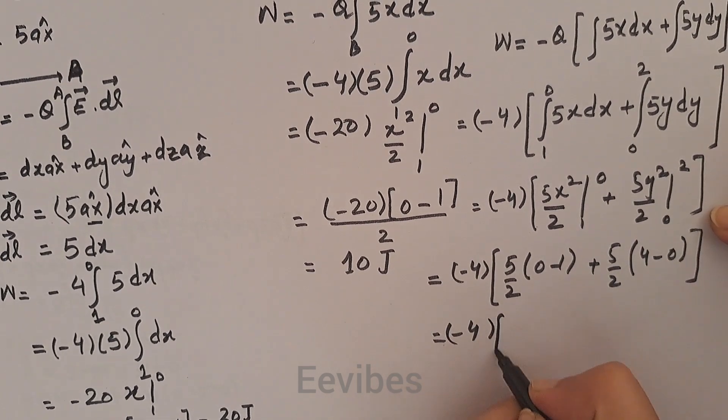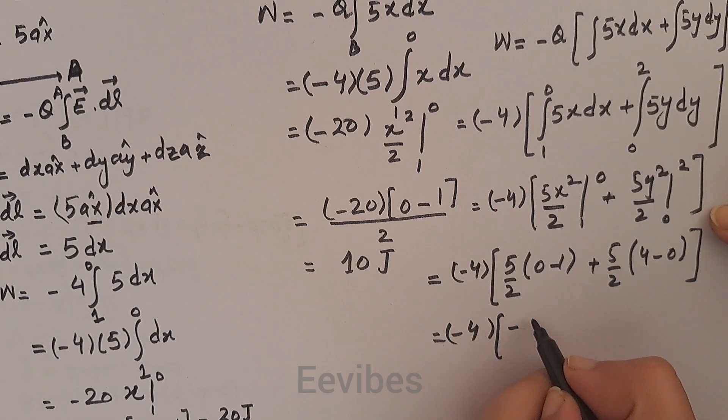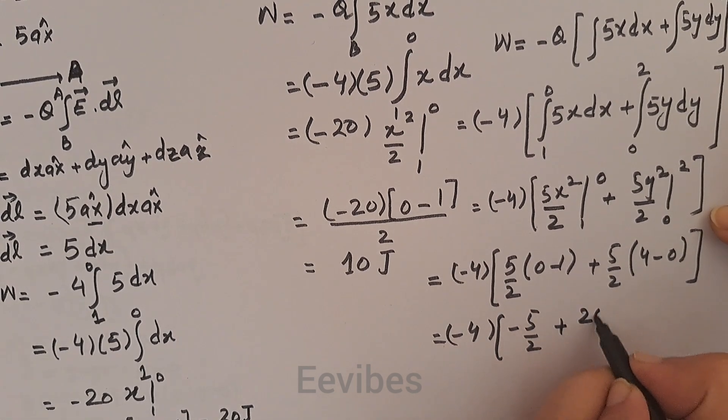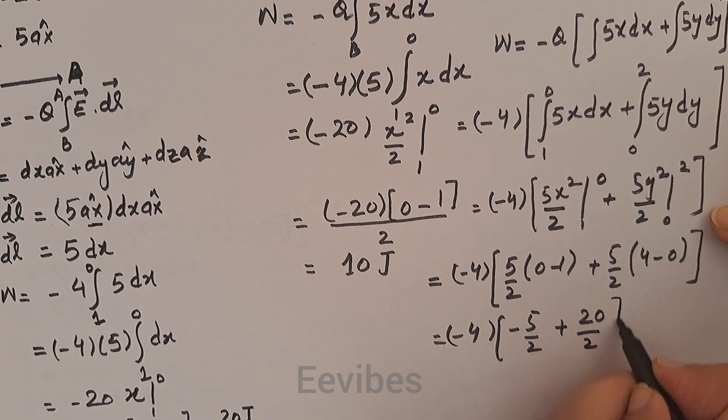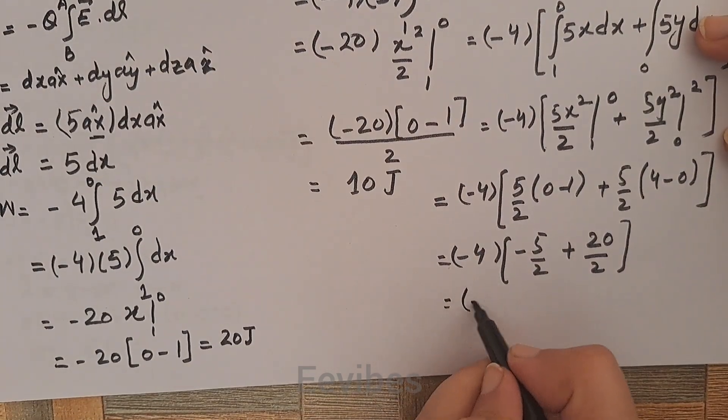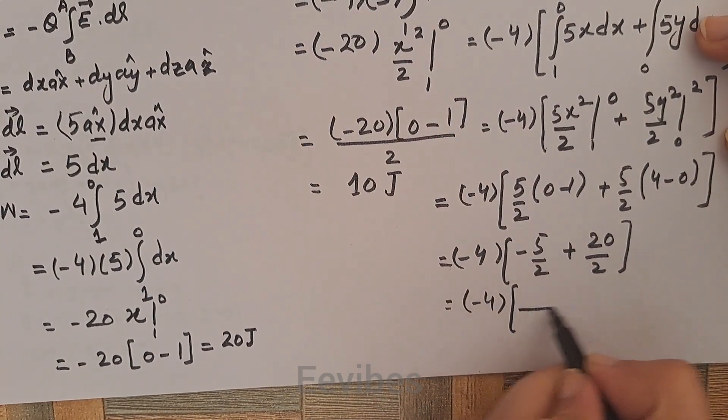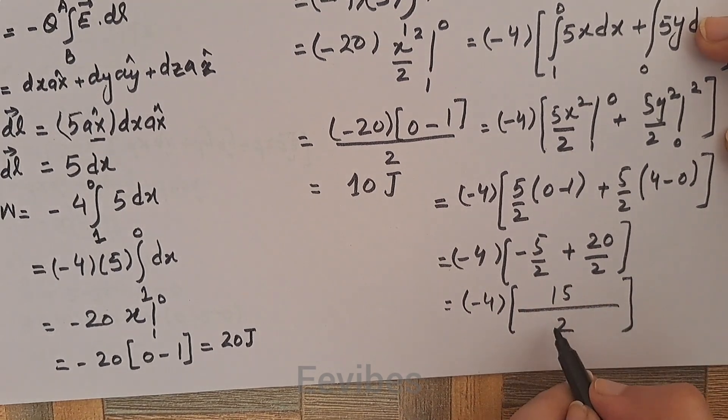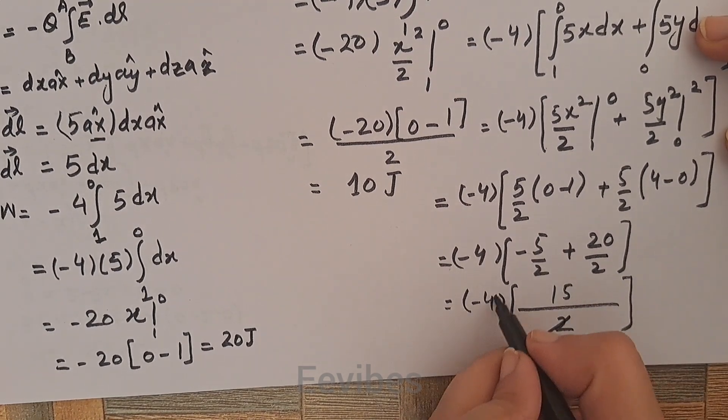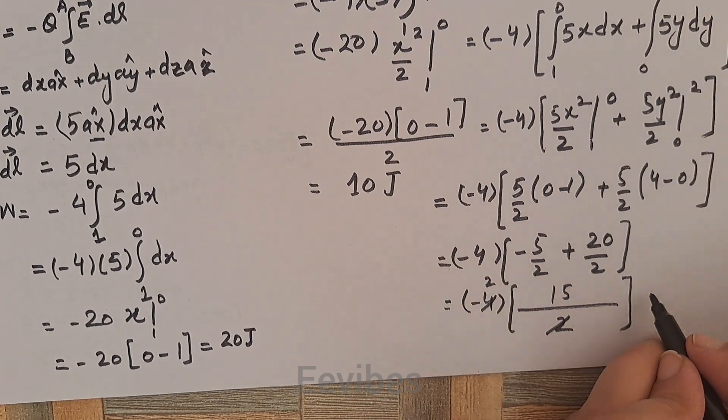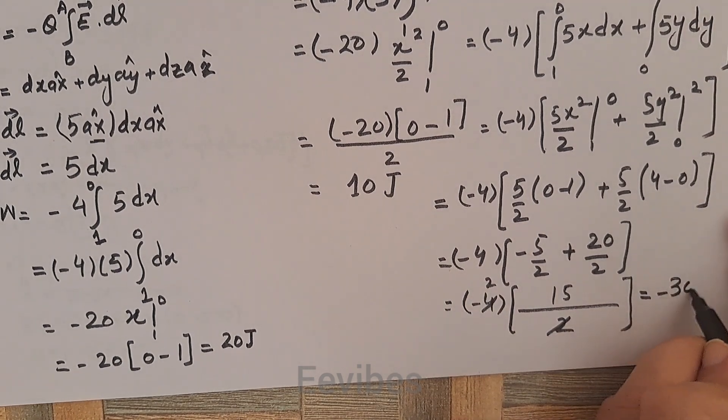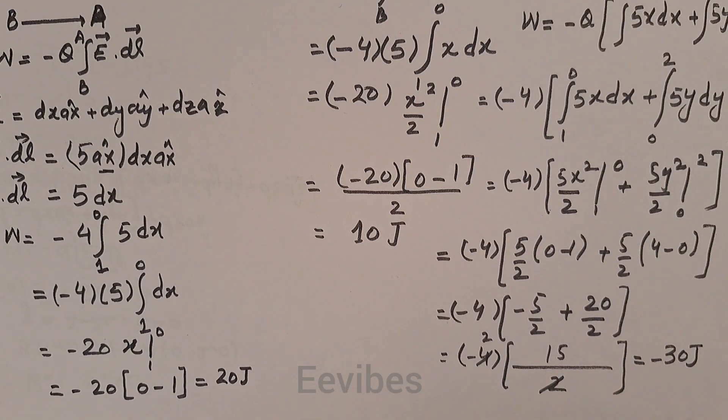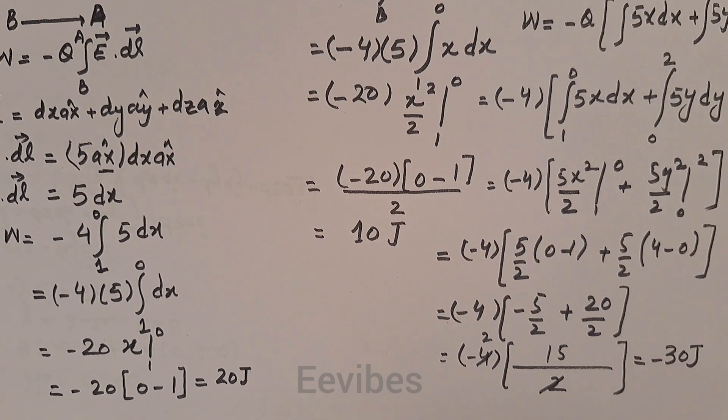On further simplification, this becomes -5/2, while this becomes 20/2. So we will have -4. Let's take the LCM, it becomes 15, and you can cancel this out, and finally you will have the work done is equal to -30 joules. So this was the solution of drill 4.2. Thank you for watching.